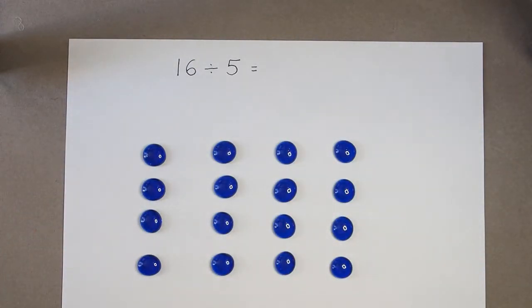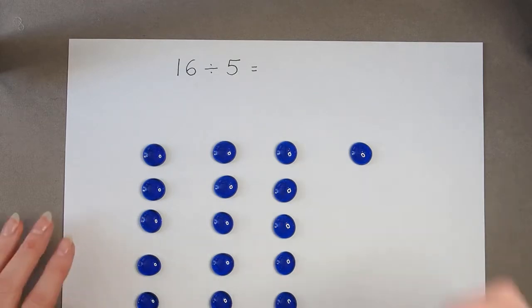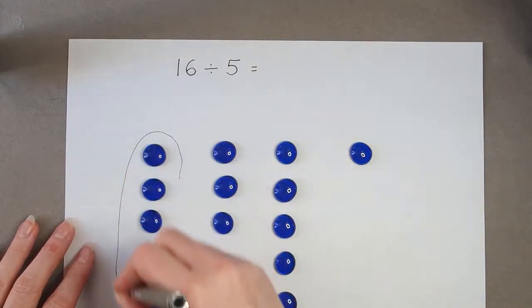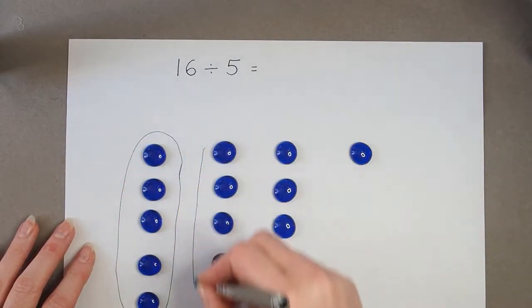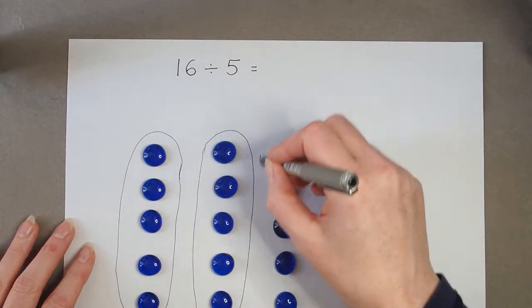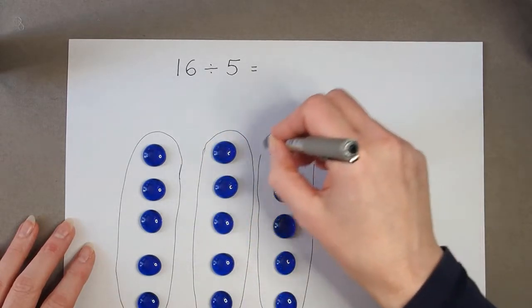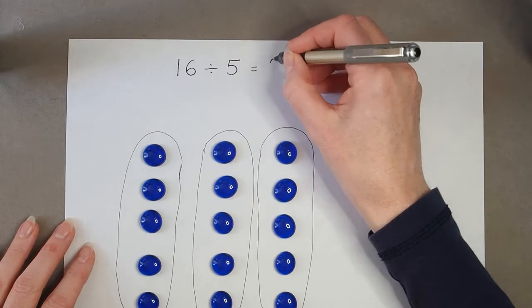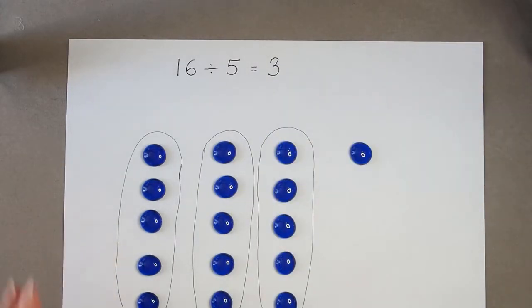I'm going to divide them by 5, so if I move a couple of counters I can make some groups of 5. So I've got 1, 2, 3 groups of 5.